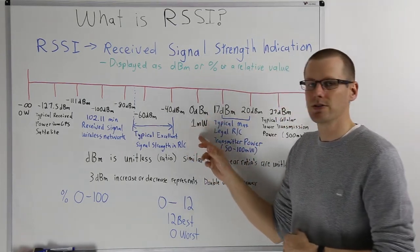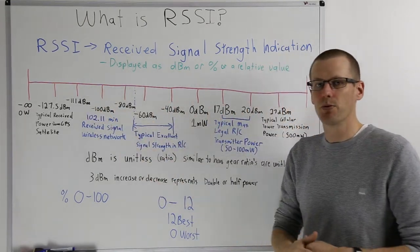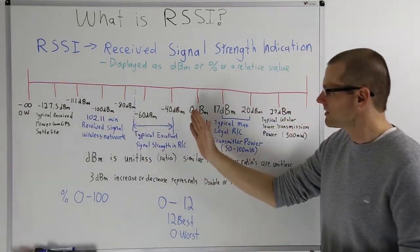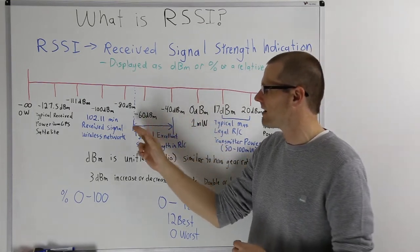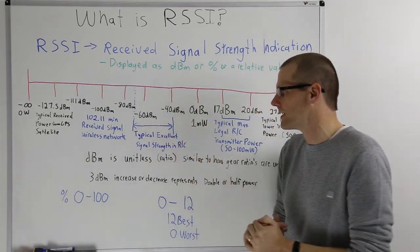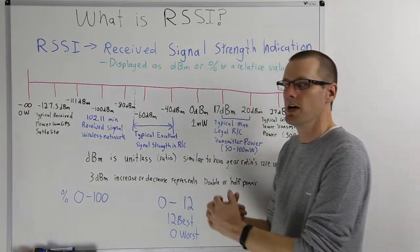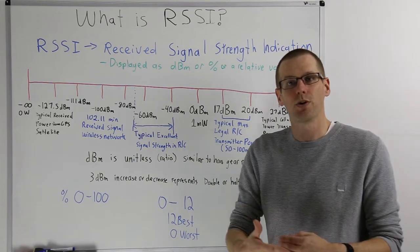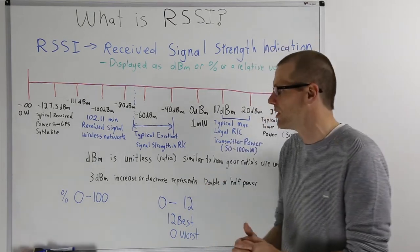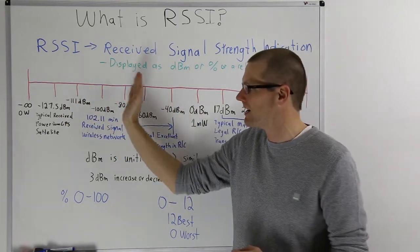At zero dBm, we talked about how this is a one milliwatt value of power. As we move towards the left hand side of the board, remember keeping in mind that as we move towards the left, our signal strength is getting weaker. We can look at the minus 40 to about the minus 70 to minus 75 range. This is where I would specifically say that you would have typical excellent signal strength in RC. A signal strength of about minus 60 is pretty good. A signal strength of minus 40 is going to be even better.